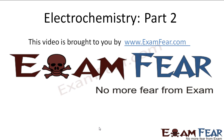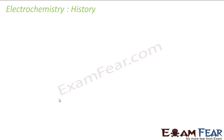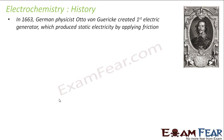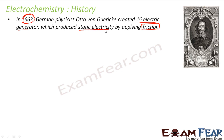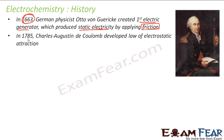This video on electrochemistry part 2 is brought to you by examfia.com. In 1663, a German physicist Otto von Guericke created the first electric generator. It was based on friction and produced static current by applying friction. Before 1663, there was no electricity at all.